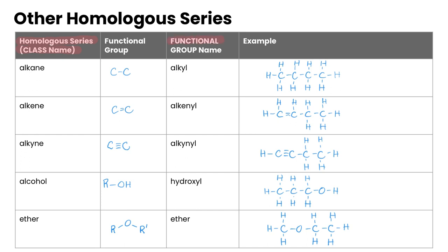The functional group, on the other hand, is an atom or a group of atoms in a molecule that gives it its characteristic chemical properties. So this is the reactive part of the molecule — when we get into reactions in other videos, you'll see that the functional group is the part taking part in those chemical reactions. Each functional group forms the basis of a homologous series.